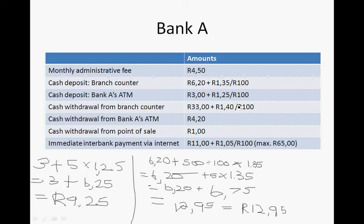Cash withdrawal from the bank counter is R33.00 plus R1.40 for every R100 that you withdraw — that's a lot. But if you withdraw from an ATM, it's only R4.20. And it's even cheaper if you withdraw from a point of sale — stores like Pep, Checkers, Pick n Pay, and ShopRite — where you only pay R1.00 for the transaction.